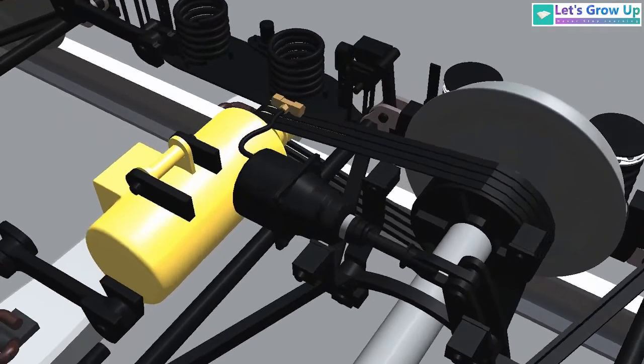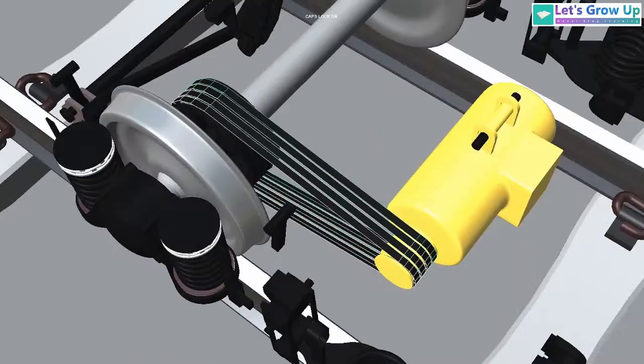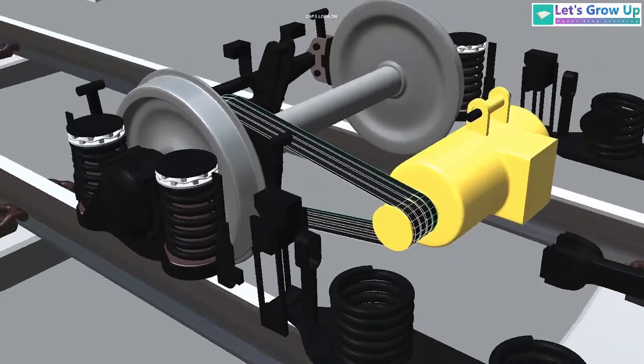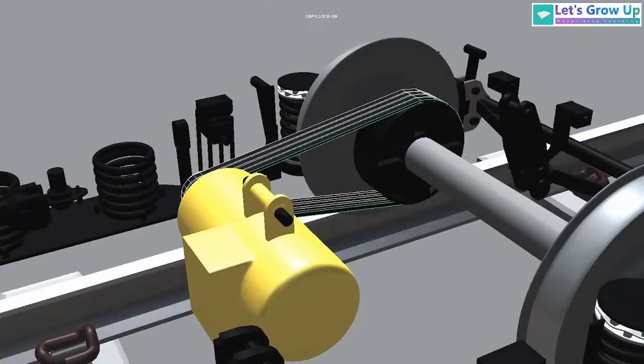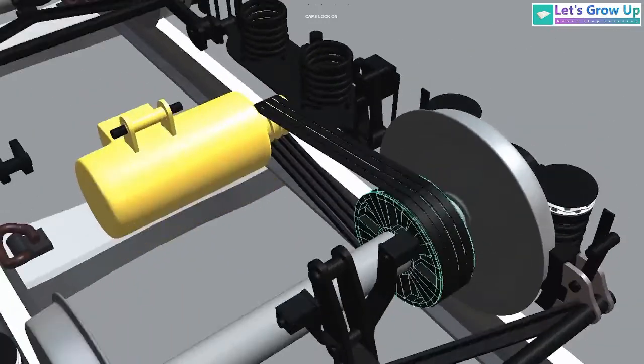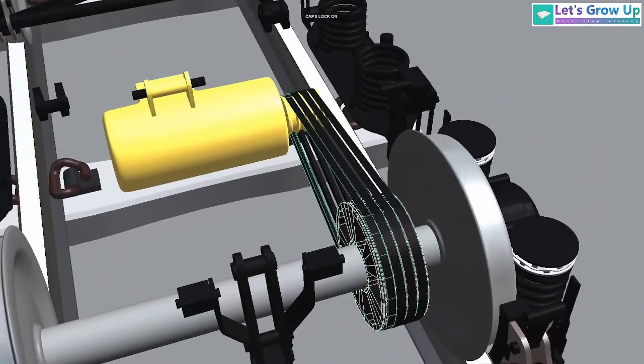You can clearly see it is driven by V-belts connected between the axle pulley and the alternator pulley. As the train moves, the spinning axle turns the belts,